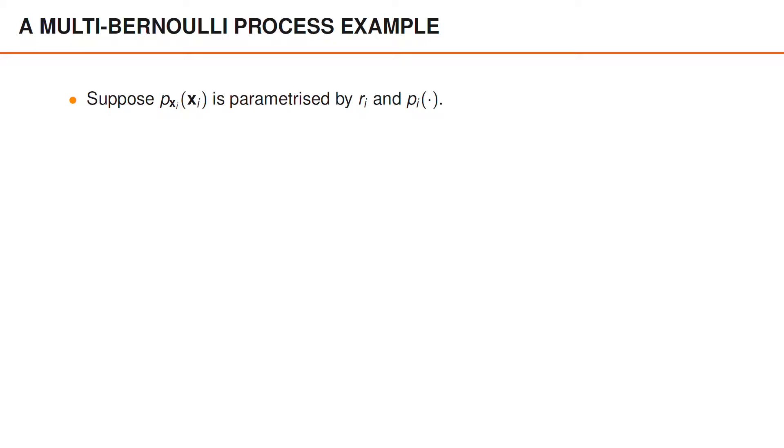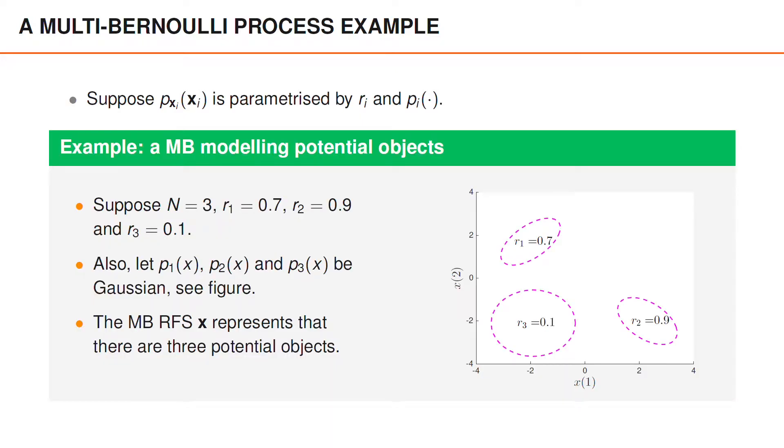For notation, we assume that the multi-object PDF of the ith Bernoulli random finite set is parameterized using ri and pi. To visualize a multi-Bernoulli random finite set and gain some intuition for what it represents, suppose the multi-Bernoulli contains three Bernoulli components whose existence probabilities are 0.7, 0.9 and 0.1. We also assume that the three Bernoulli components have spatial PDFs as illustrated in the figure.